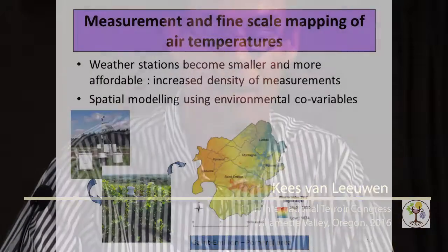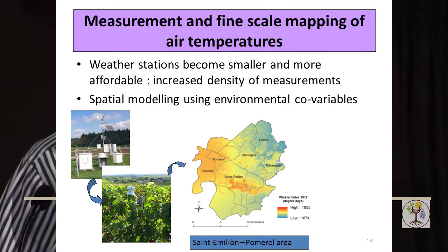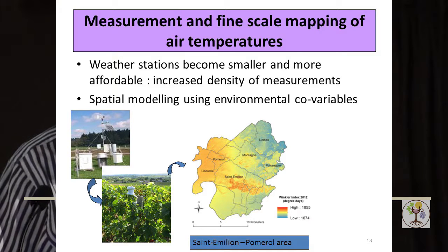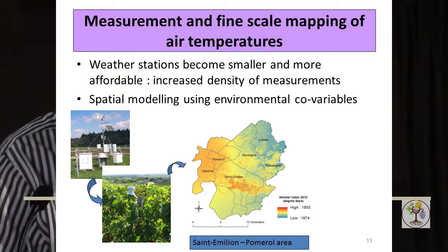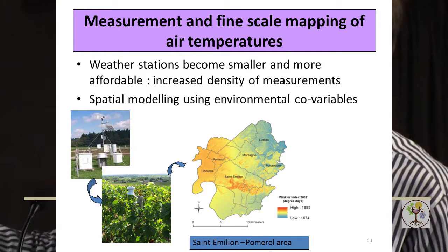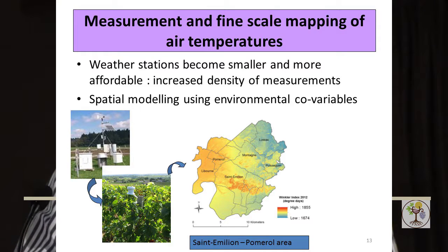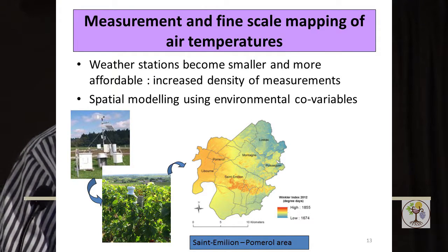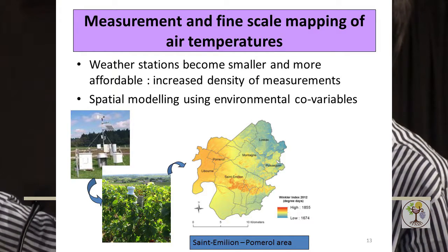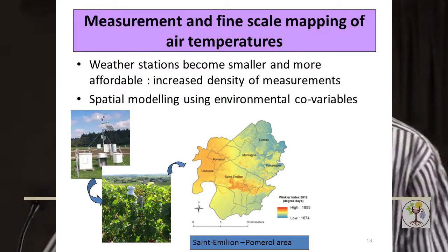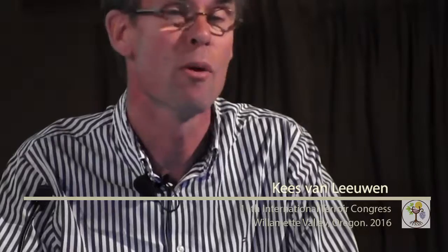Much more recently there have been significant advances in temperature mapping at vineyard scale. We used to have one weather station in the main wine-growing regions, then automatic stations were developed and we got more and more. Today we also have very small weather stations with temperature loggers inside — these are very cheap, so you can put plenty of them in the vineyard. If you combine this information with data from a digital elevation map, you can make temperature maps. This is an example my colleague Laure Rességuier showed on Monday: very precise temperature mapping in the Saint-Émilion and Pomerol area, meaning we can now map temperatures at the same scale as high-resolution soil maps.